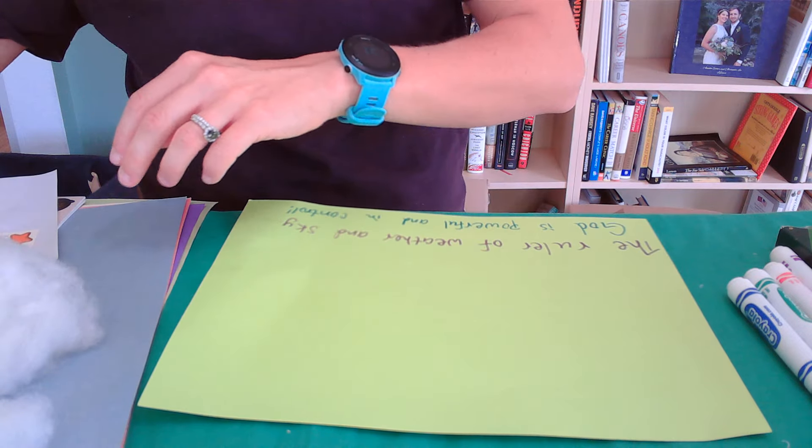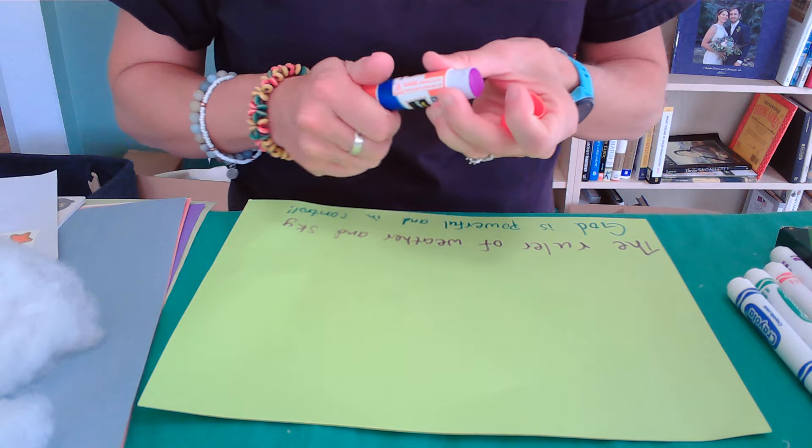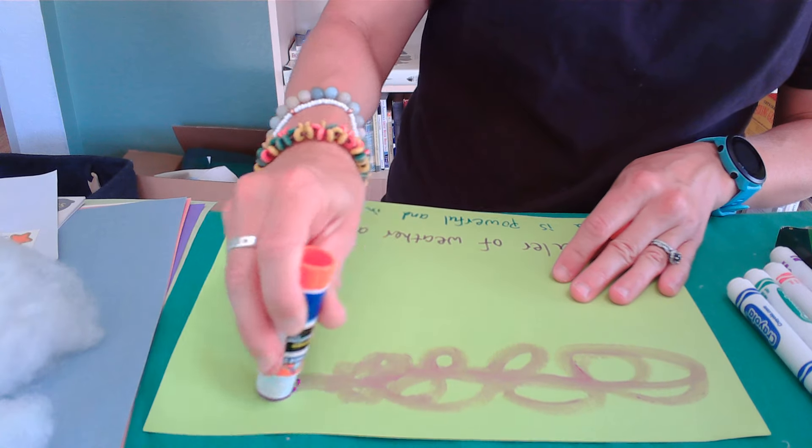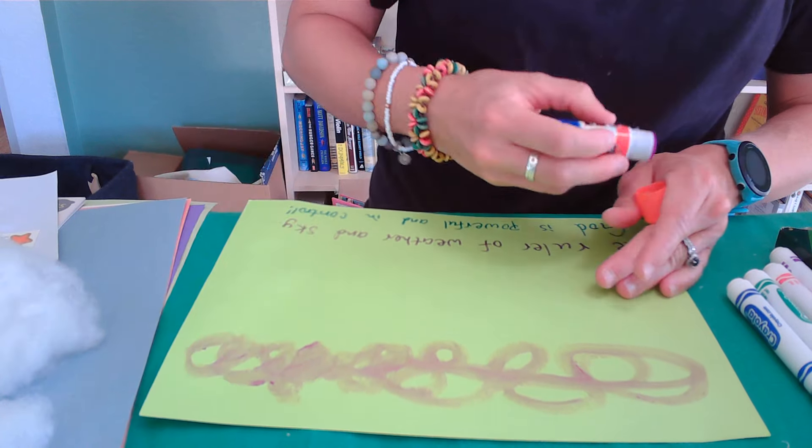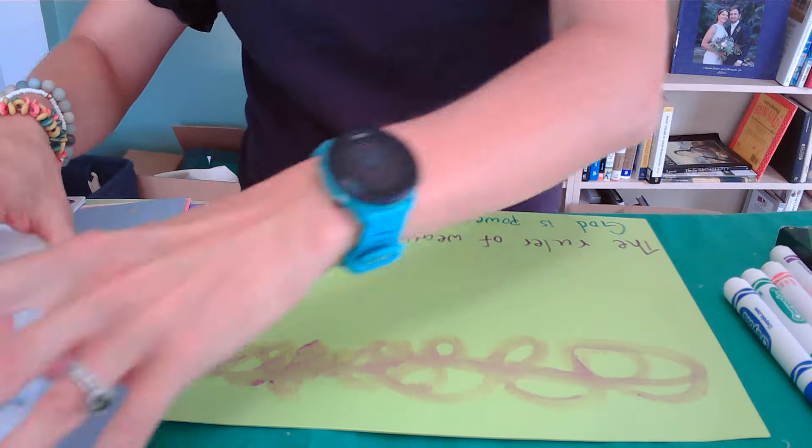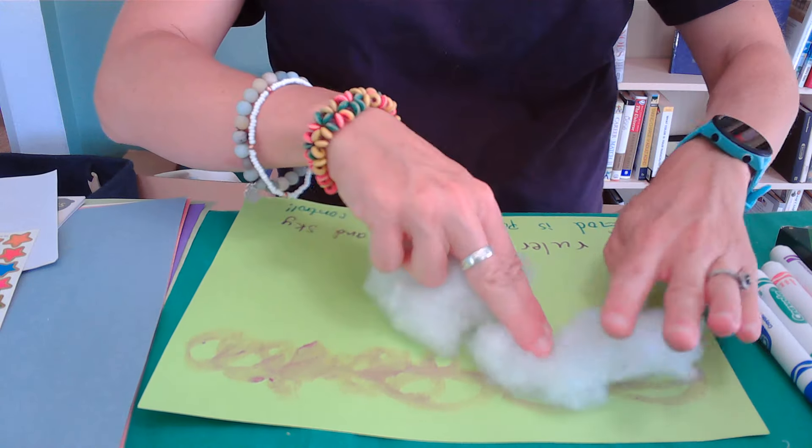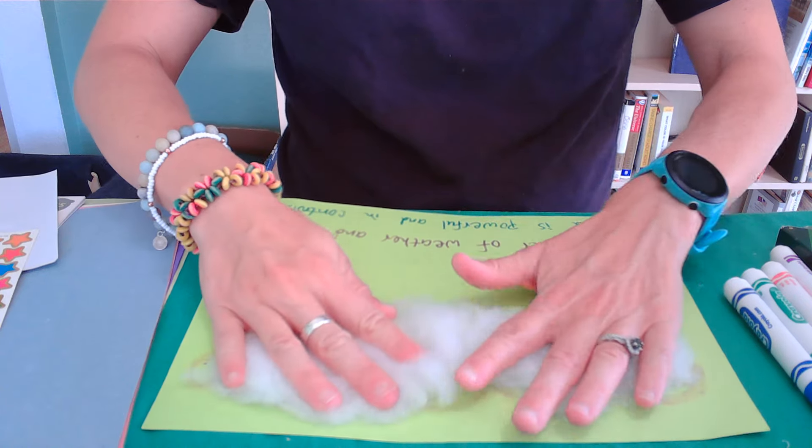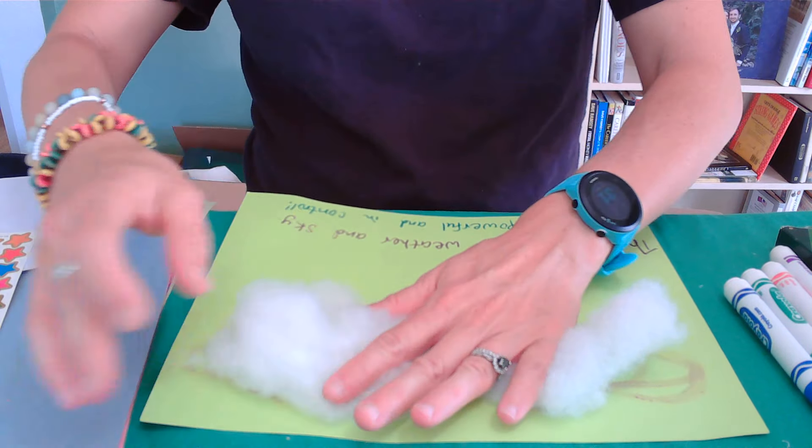So up here I've got some clouds. And we're going to kind of make a collage. You can have this be more organized if you prefer. I'm sort of doing a scattering of things. So we're going to start with my clouds here. There we are.